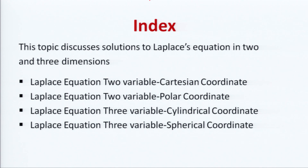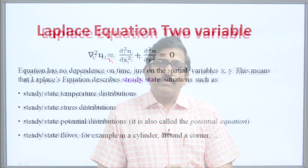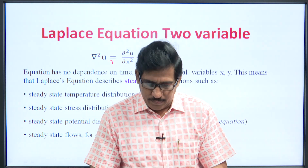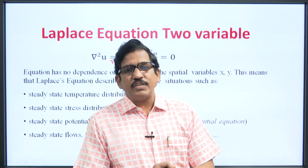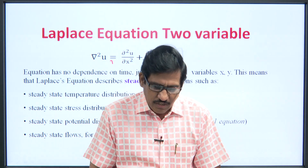Cylindrical and spherical coordinate system Laplace equations are of three variables. The Laplace equation is a very popular differential equation represented in the form del²u = del²u/del x² + del²u/del y². These are steady state equations, meaning they are independent of time. Any equation which is independent of time in two or three variables is known as a Laplace equation.